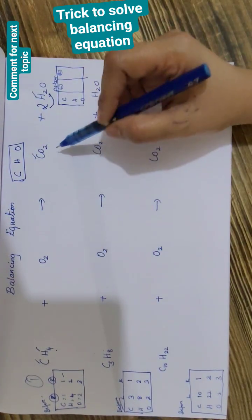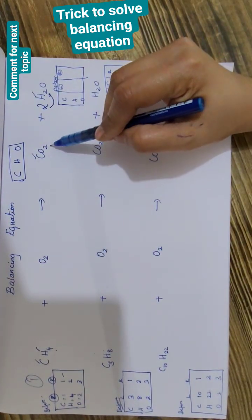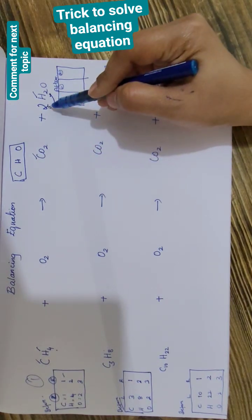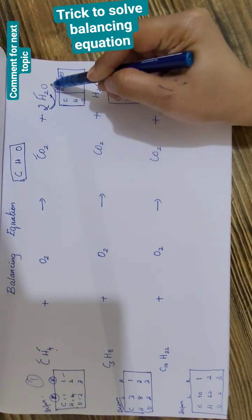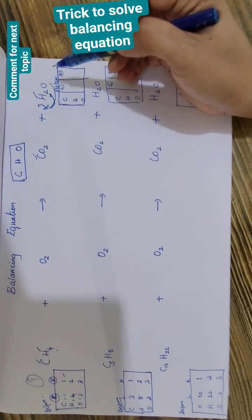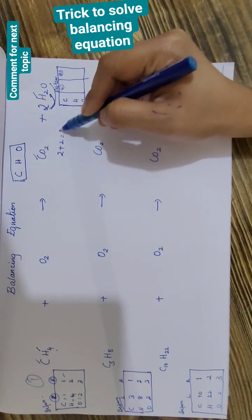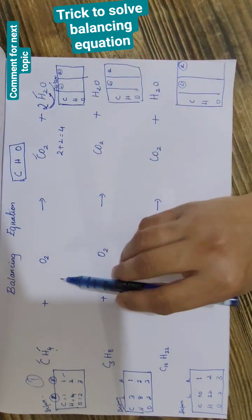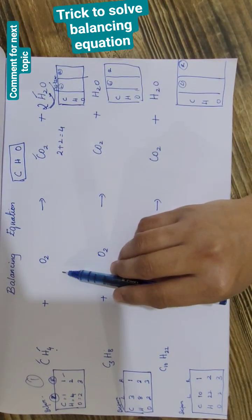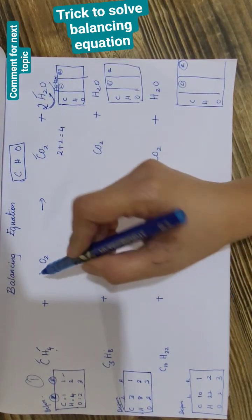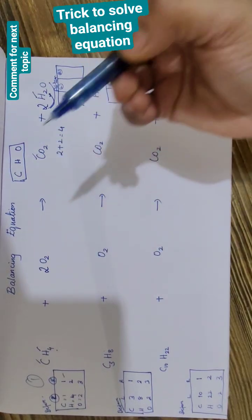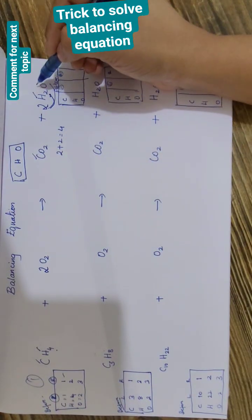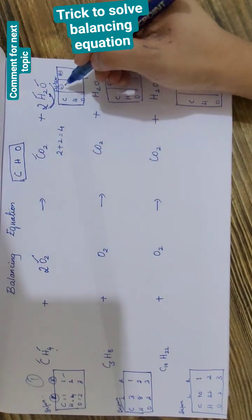Now we'll go for oxygen. How many oxygens do we have on the right side? Two plus two times one, which is two plus two — four oxygens on the right side. We have to make four on the left side, so I will add two in front of oxygen. Now our oxygen is also balanced.